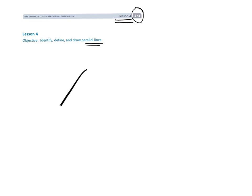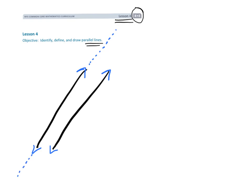An example of parallel lines: these are two lines that, when they continue — when they could continue forever — they never intersect. This line would be going forever in both directions, and this line is going to go forever in both directions. The two lines never intersect. That's what parallel means — these two lines never intersect.